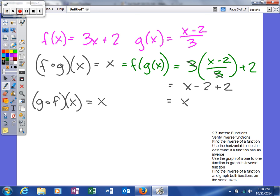Next, we're going to figure out g(f(x)). That means we're going to take our f function and plug it into our g function. We get (3x + 2 - 2)/3.